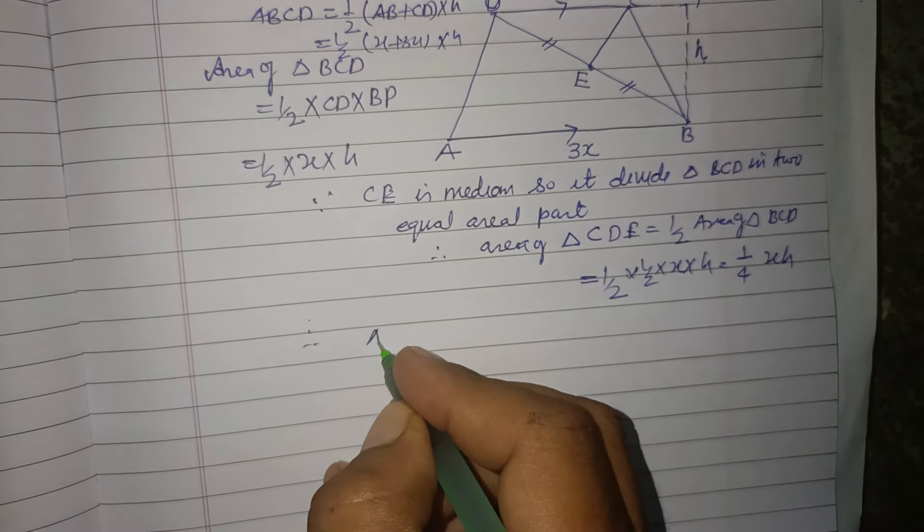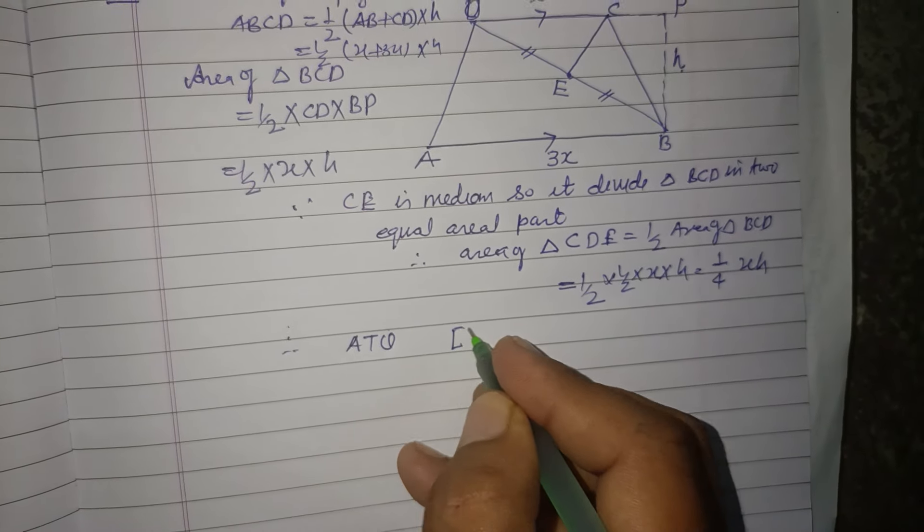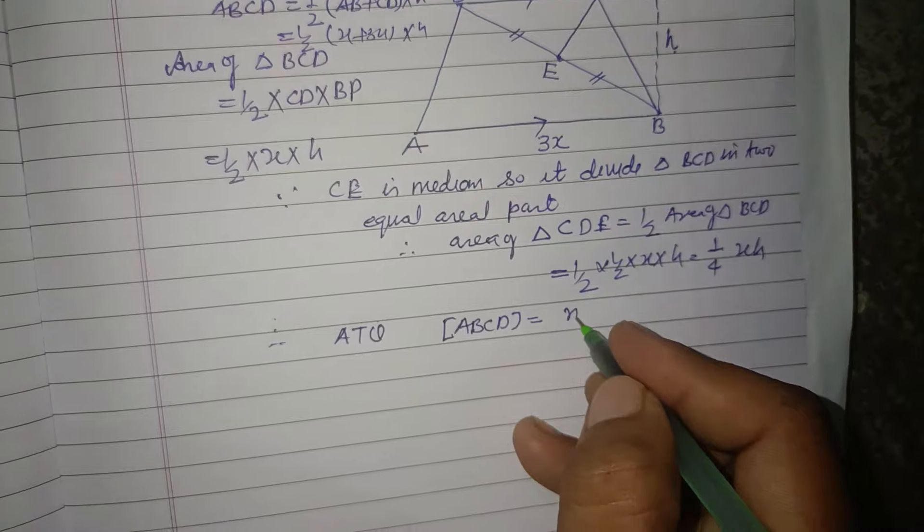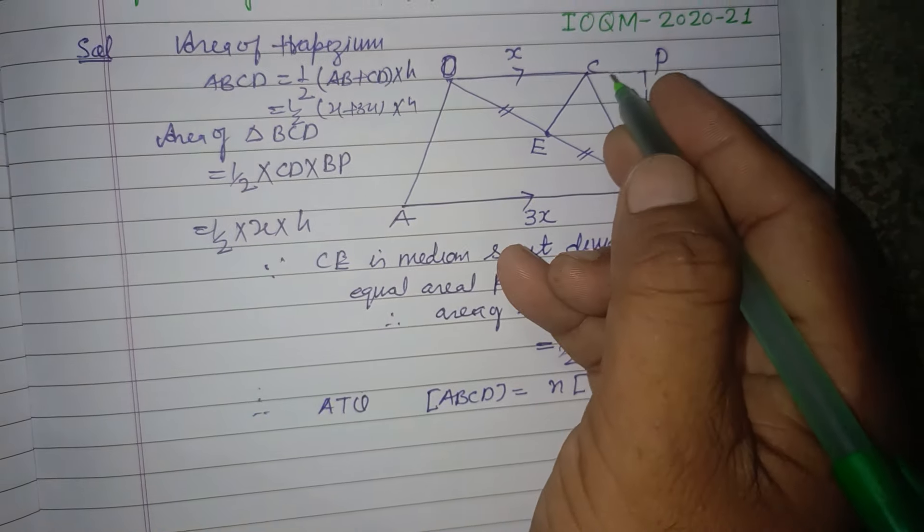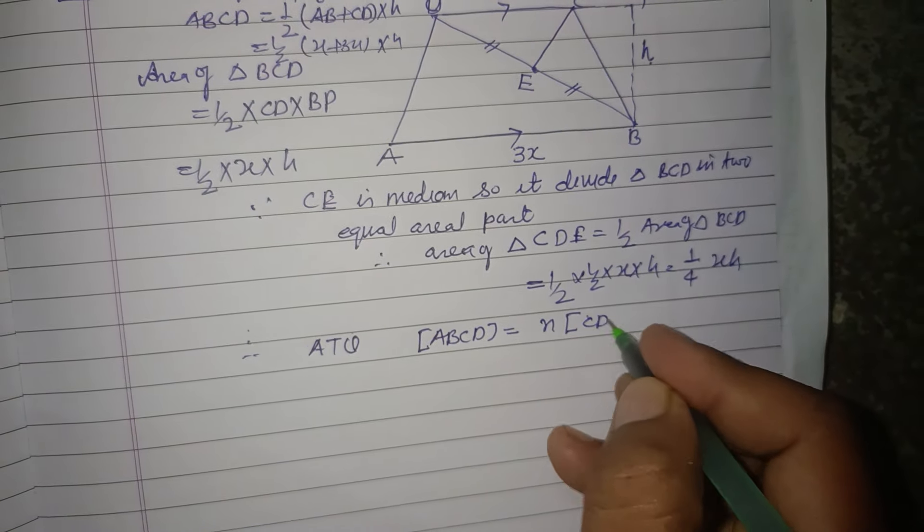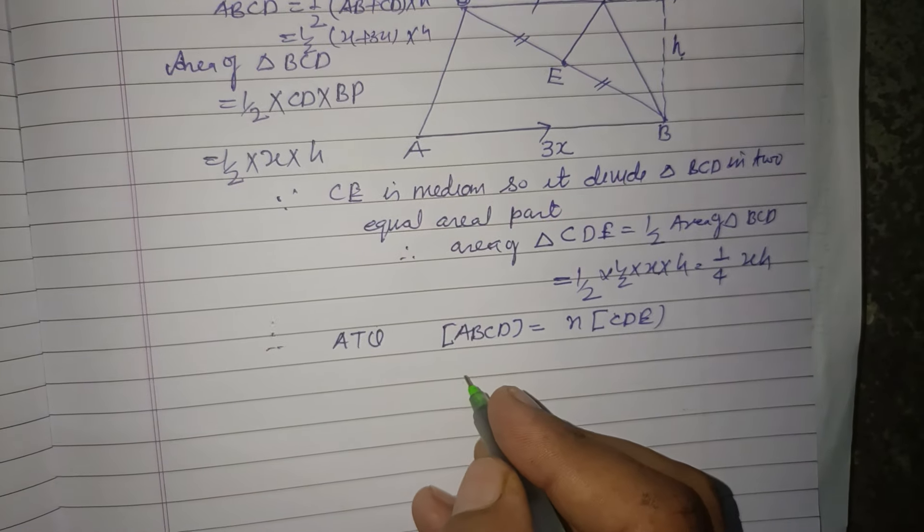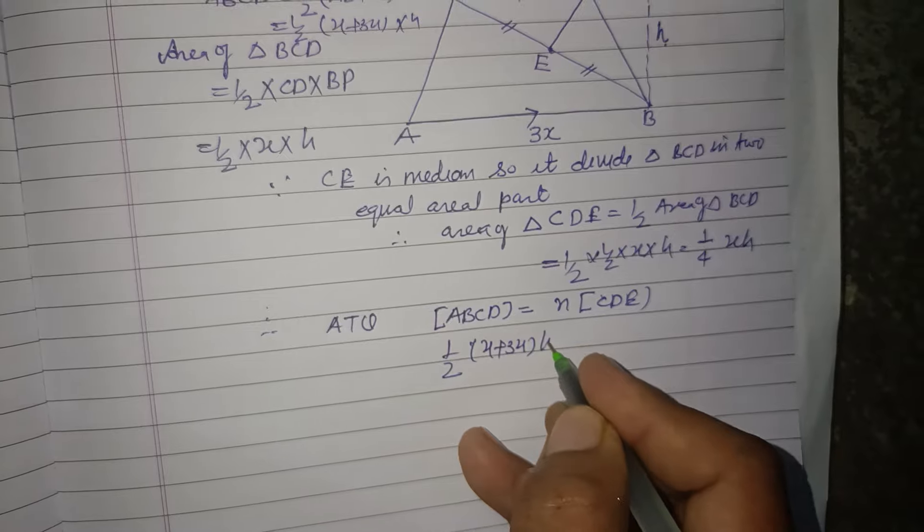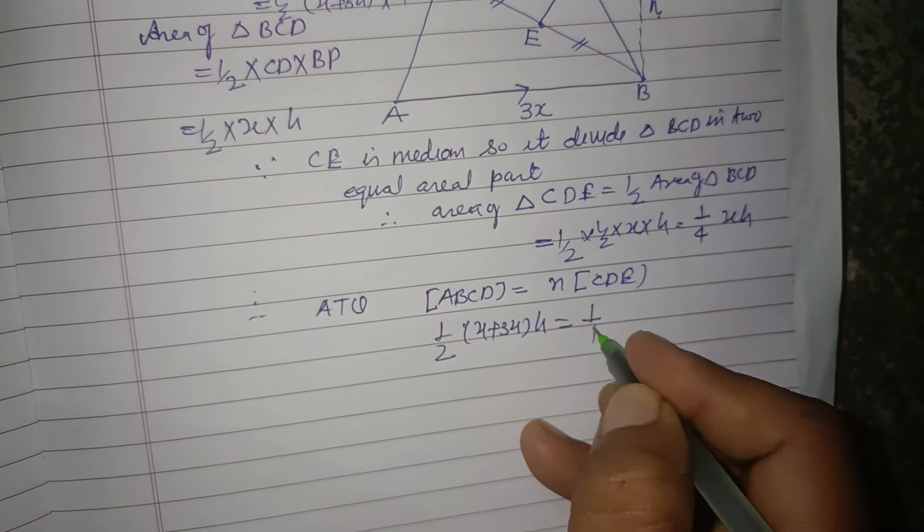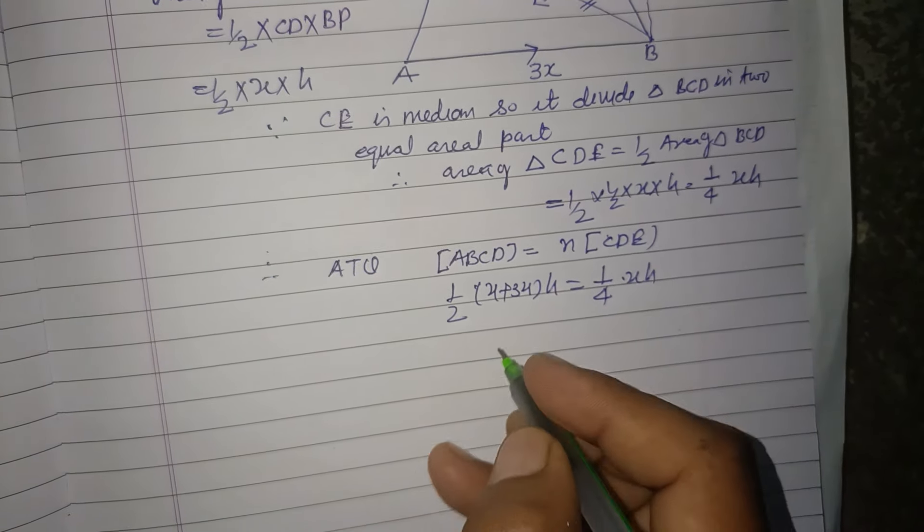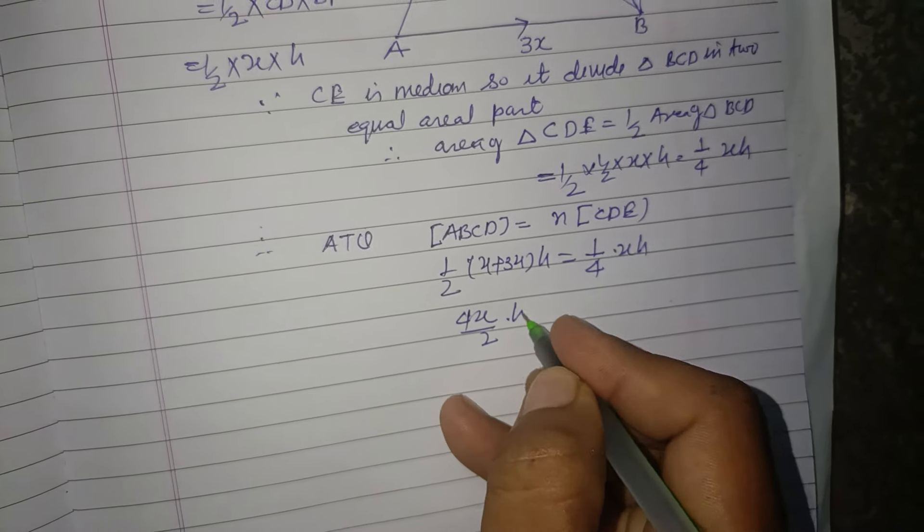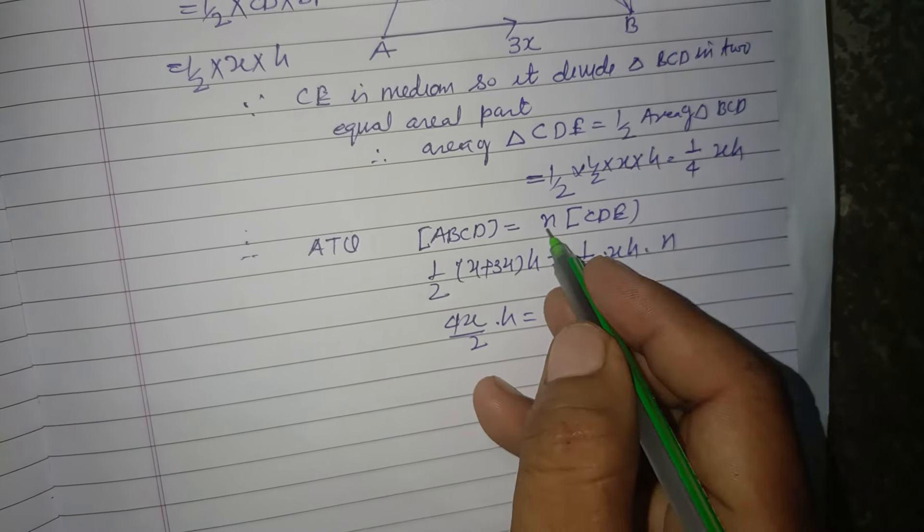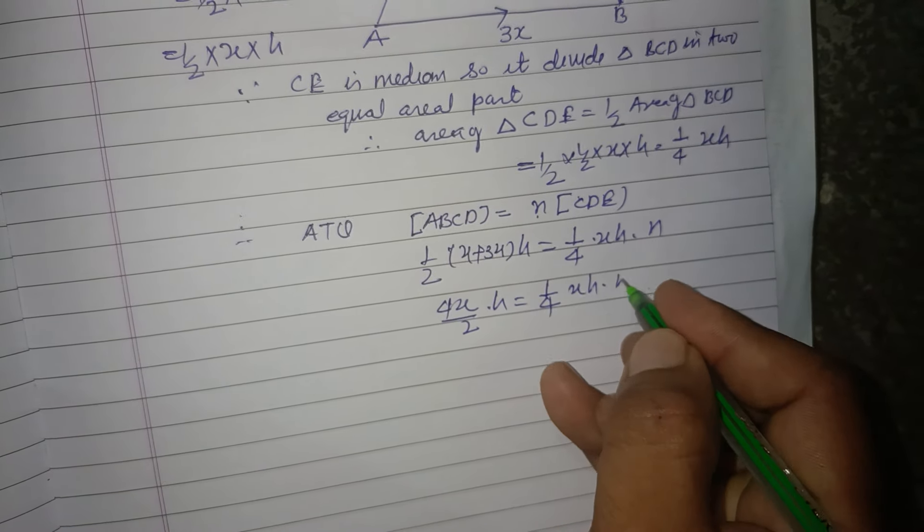According to given condition, area of ABCD equals n times area of CDE. Putting these values, this is half of x plus 3x into h, and this is one-fourth x into h. So this is 4x by 2 into h, which is one-fourth x into h into n.